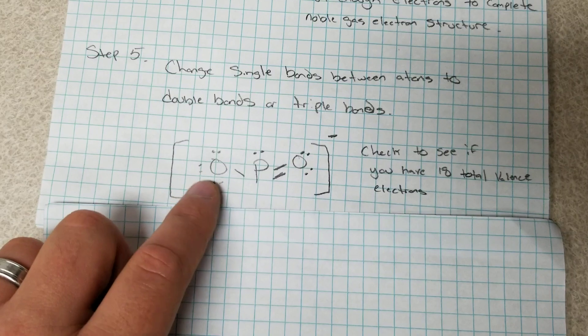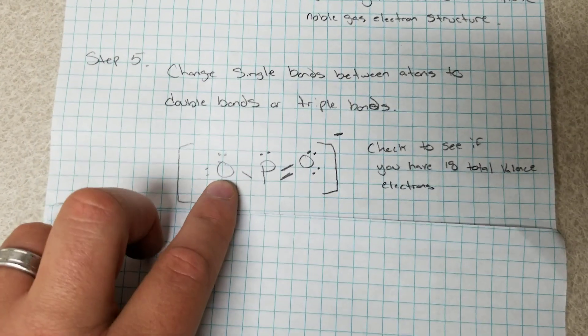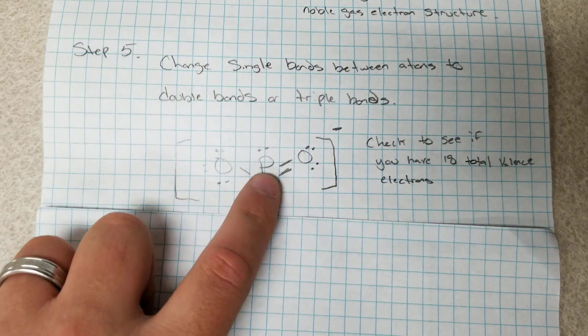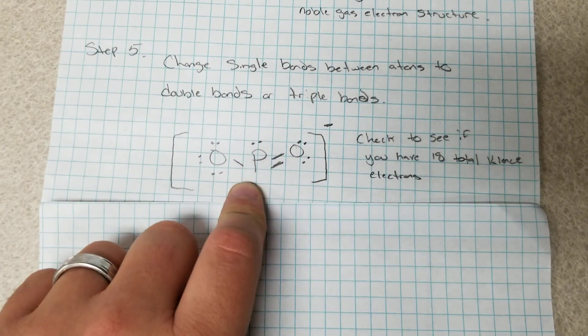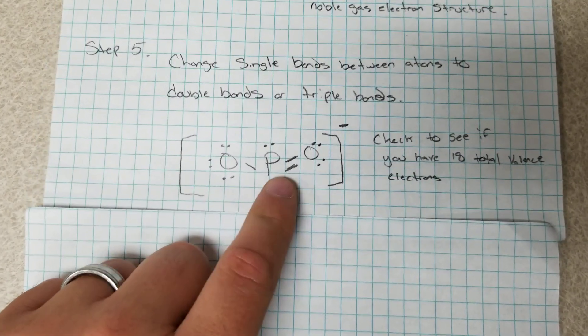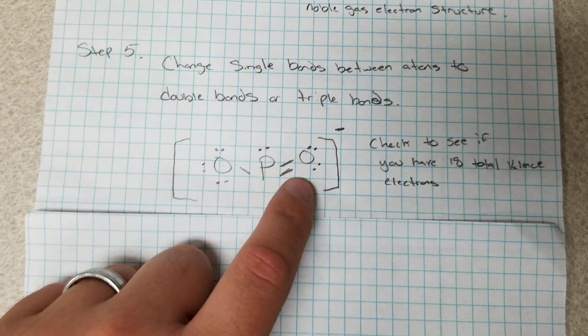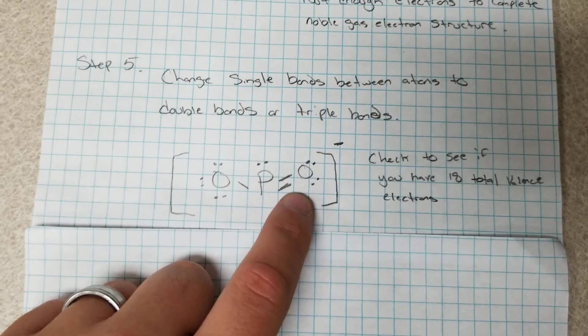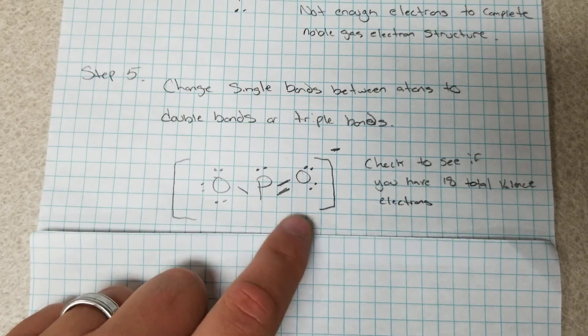Oxygen right here has two, four, six, eight which makes the oxygen atom complete. The phosphorus we have two, four, six, eight electrons which makes the phosphorus atom complete and then we have two, four, six, eight on the other oxygen atom which makes that oxygen atom complete.